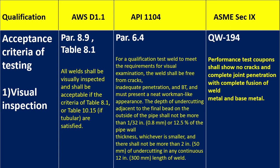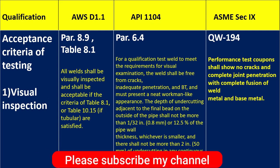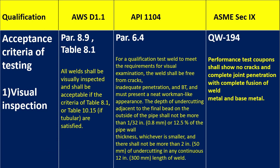If you go to API 1104, para 6.4, it is mentioned that for a qualification test weld to meet the requirement for visual examination, it shall be free from cracks, show adequate penetration, and present a neat workmanlike appearance. The depth of undercutting adjacent to the final bead on the outside of the pipe shall not be more than 1/32 inch, which is 0.8 mm. For ASME Section 9, QW-194 requires no cracks and complete joint penetration with complete fusion of weld metal and base metal.